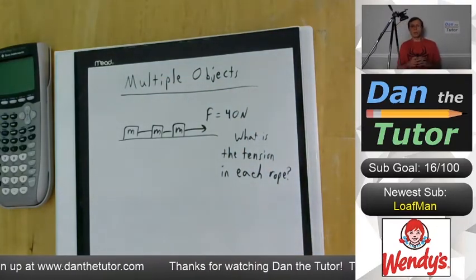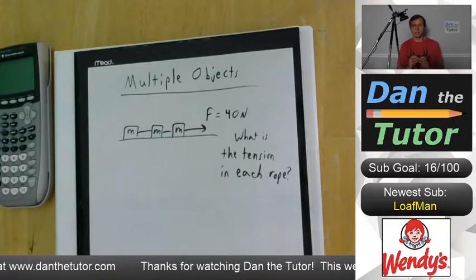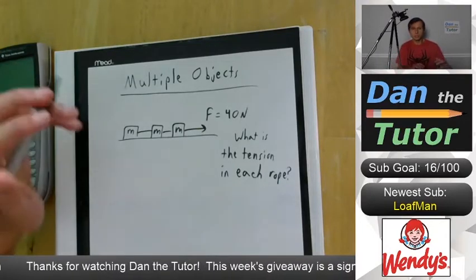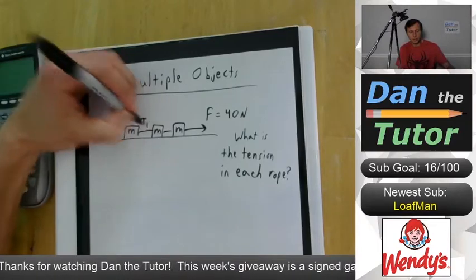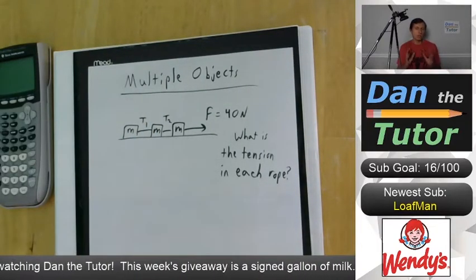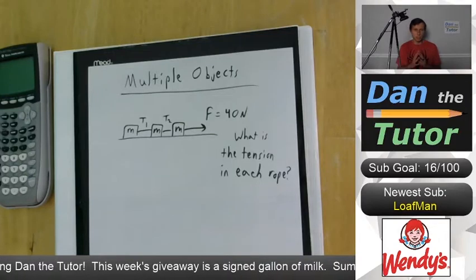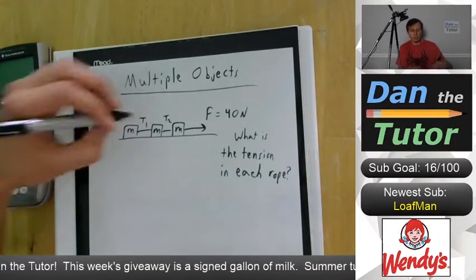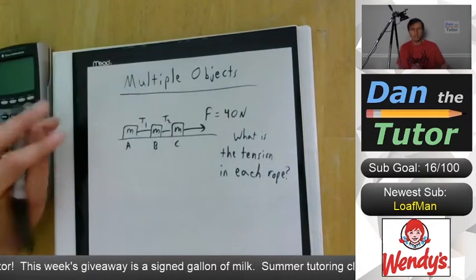So this is a tricky problem because it involves multiple objects. But the secret to finding the tension in each rope, we can call it T1 and T2, is really by looking at the boxes individually. And here's what I mean by that. We can label these boxes A, B, and C.